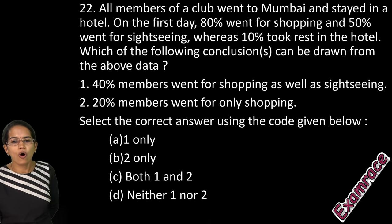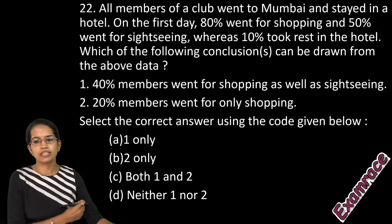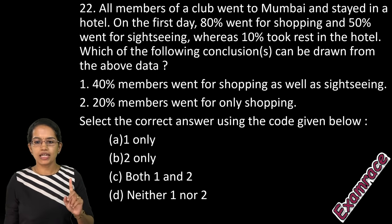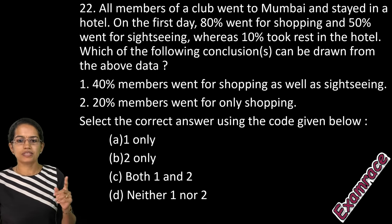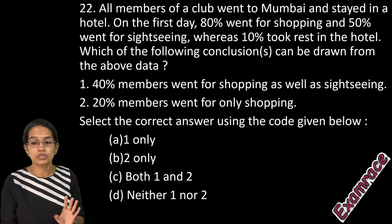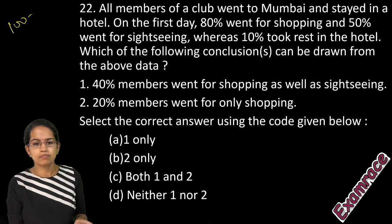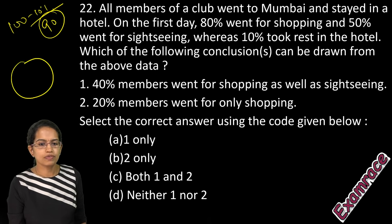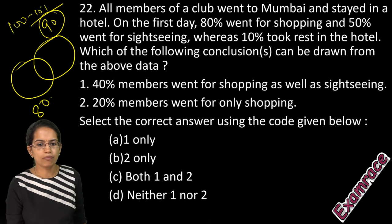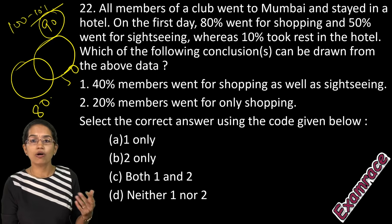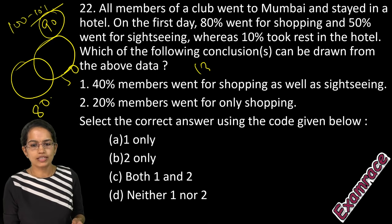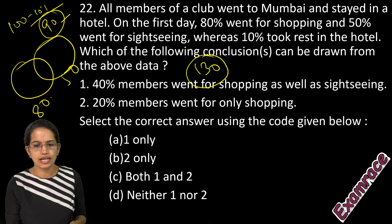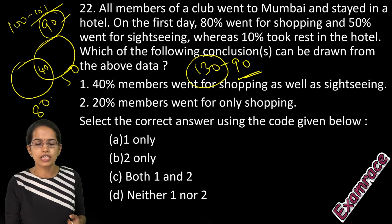The next interesting question: all members of a club went to Mumbai and stayed in a hotel. On the first day, 80% went shopping, 50% for sightseeing, and 10% rested in the hotel. Since 10% rested, 90 people went out. Of those, 80 went shopping and 50 went sightseeing — 130 in total. 130 minus 90 gives 40, so 40 members went for both shopping and sightseeing.